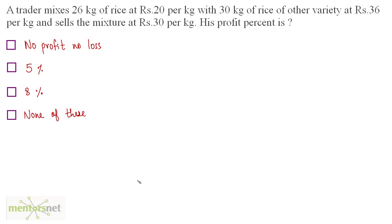A trader mixes 26 kgs of rice at Rs. 20 per kg with 30 kgs of rice of another variety at Rs. 36 per kg, and sells this mixture at Rs. 30 per kg. What is his profit percentage?